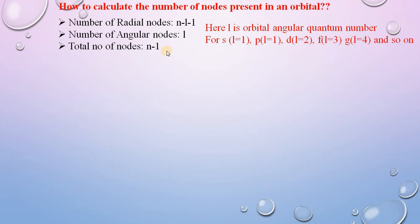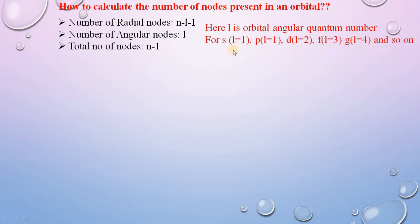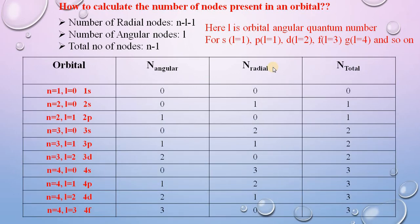The orbital angular quantum number l designates orbital types: l equals 0 is the s orbital, l equals 1 is p, l equals 2 is d, l equals 3 is f, l equals 4 is g, and so on alphabetically. Here are some examples of how to calculate the number of angular nodes, radial nodes, and total nodes, given in a tabular format.